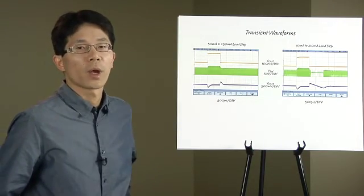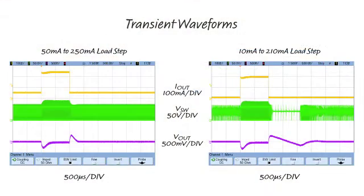Let's take a look at the transient response. The graph on the left shows a 50-milliamp to 250-milliamp load step and the graph on the right shows a 10-milliamp to 210-milliamp load step. In either case, the output voltage undershoot and overshoot are less than 400 millivolts.